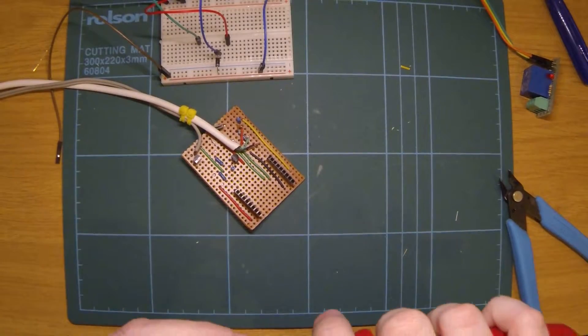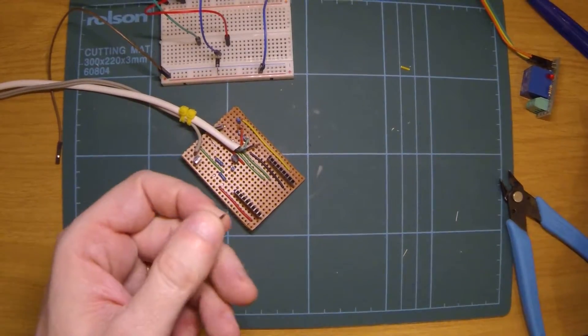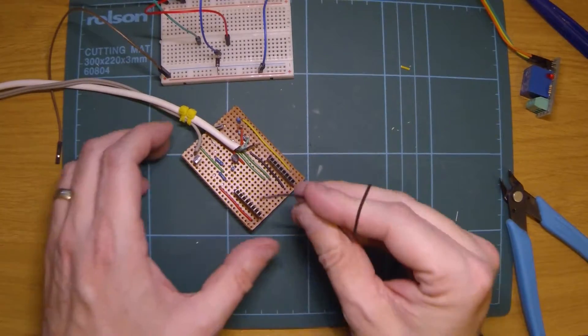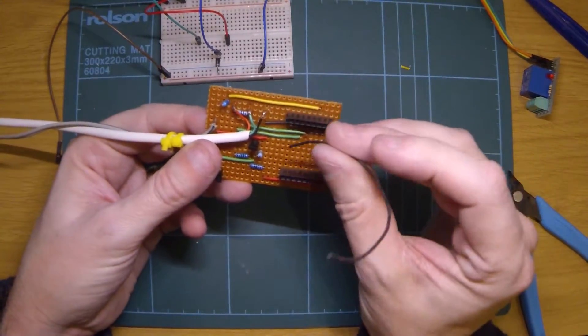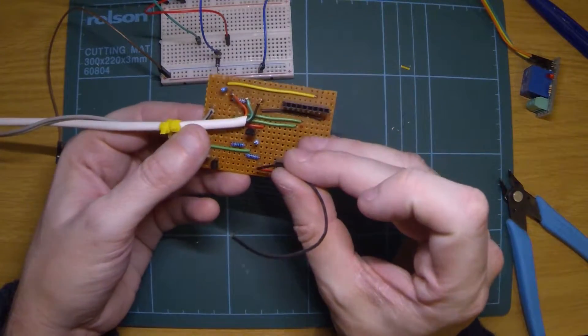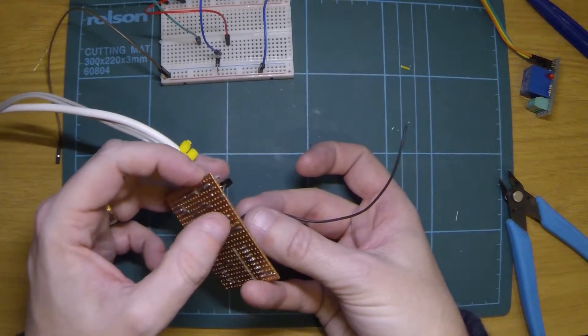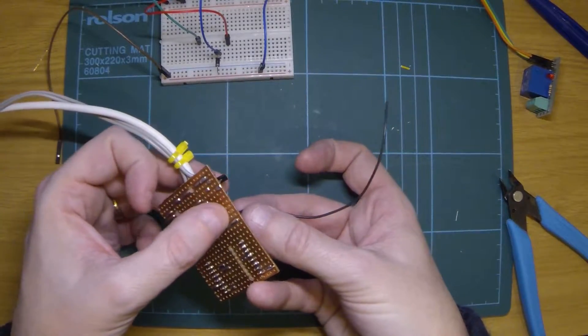The next bit I want to do is get an earth. So I'm going to actually trace that up from another place that I've got already an earth from the board, which is about there. So I'll get that soldered in and joined up to the transistor.